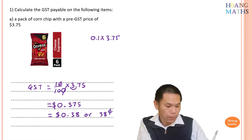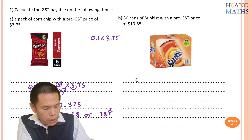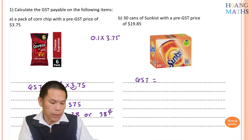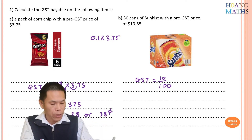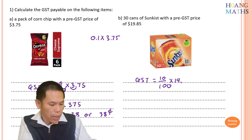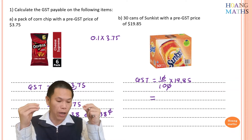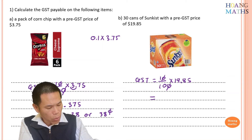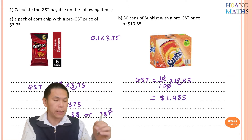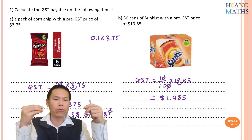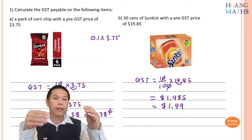For the second item, we need to work out the GST on $19.85. GST is equal to 10 over 100 times 19.85. I cancel the 100 with the 10, giving 19.85 divided by 10. Moving the decimal point gives $1.985. Because we're dealing with money, we round to two decimal places: $1.99.